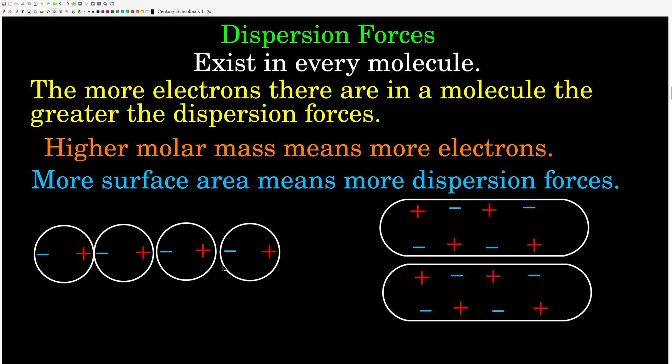What we're talking about here is the force between different species — two molecules or two atoms that are not attached to each other. That's as opposed to intramolecular forces, which we already talked about — those are bonds, ionic bonds or covalent bonds. This is the next level out. The reason we're talking about this is that the strength of the intermolecular forces between molecules or atoms influences their behavior, causing them to be a solid, liquid, or gas at a given temperature and pressure.